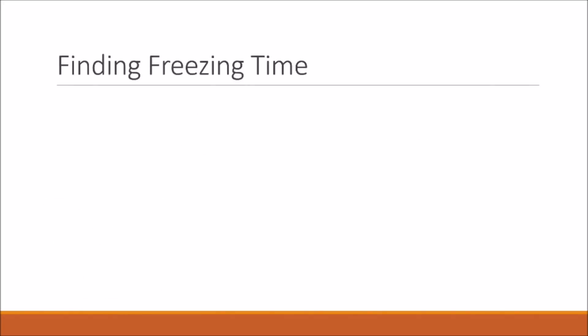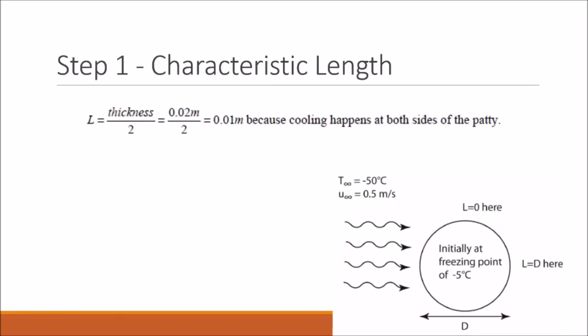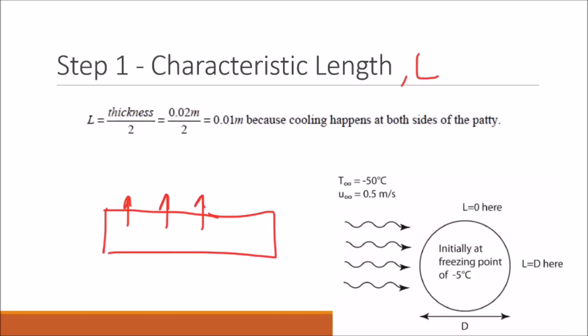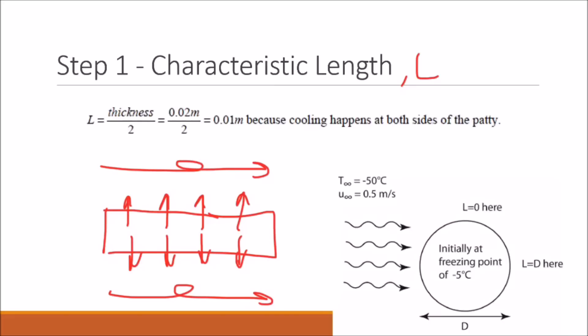Now we move on to finding the freezing time. Our first step is to define the characteristic length. In this part of the problem, heat is being lost symmetrically from the middle of the paddy to the outside on both sides, since we have flow on either side. If we imagine our center line as x equals zero, then our characteristic length is simply half of the thickness of our paddy, which gives us 0.01 meters.